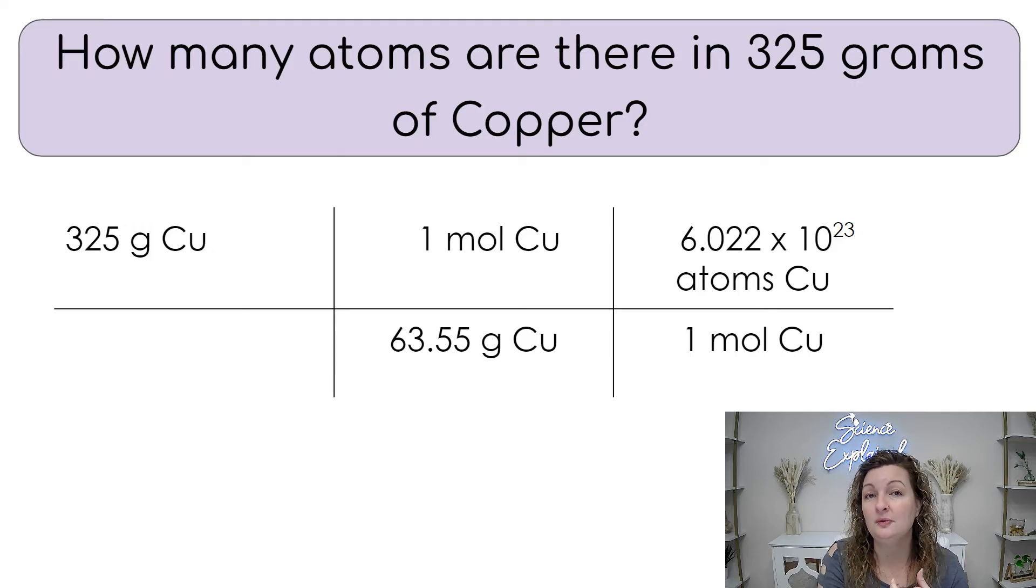So we could say formula units, atoms, molecules, ions, electrons. There's so many different things that qualify as a particle. So if you see any of those as your unit, it's going to be Avogadro's number.